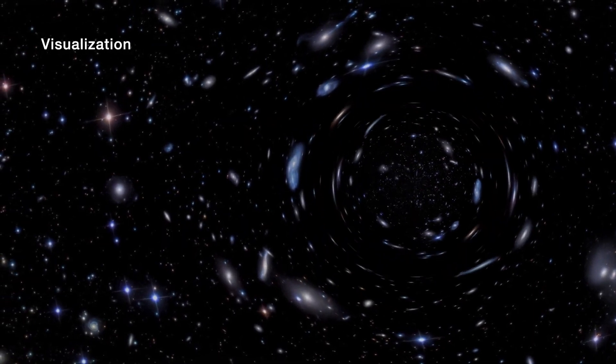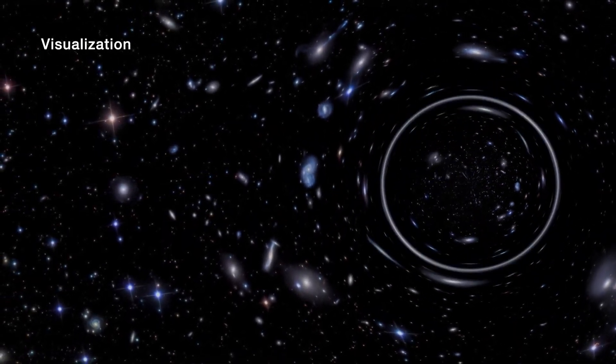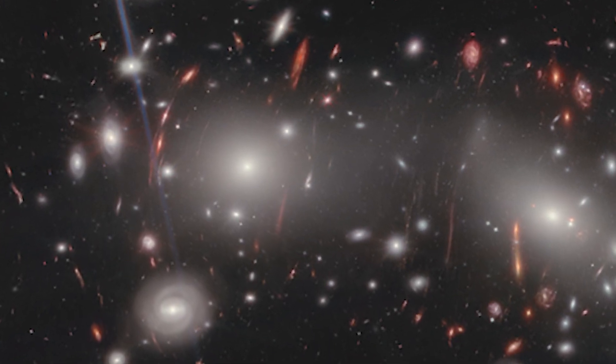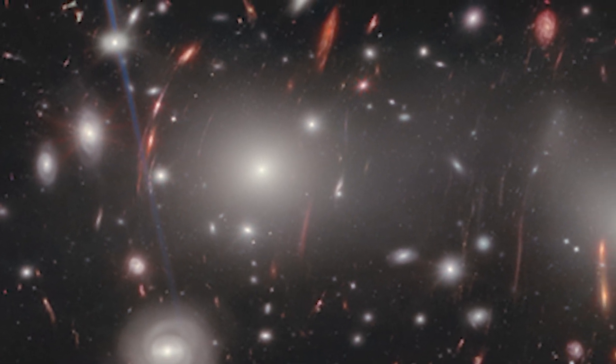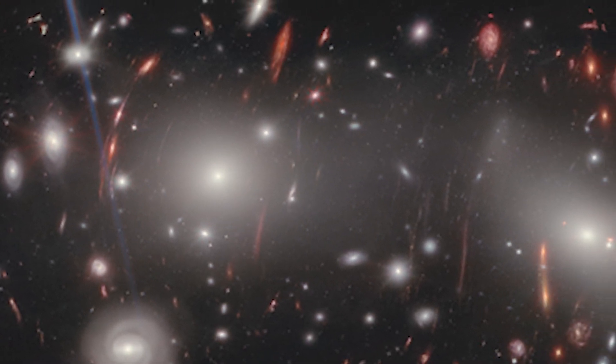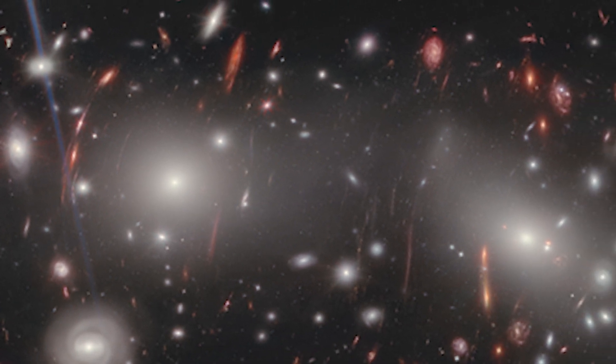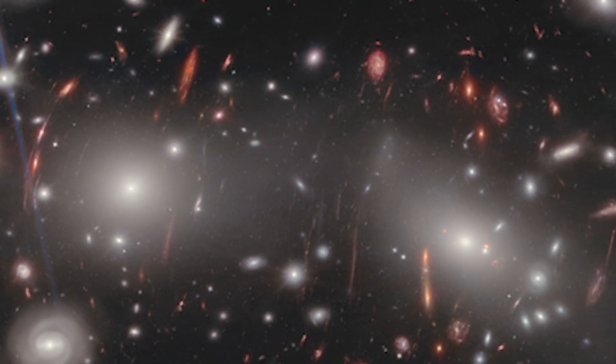The intense gravity of these objects bends the path of light, causing distant objects to appear distorted or magnified. By observing the effects of gravitational lensing, astronomers are able to study objects that would otherwise be too distant or faint to detect.